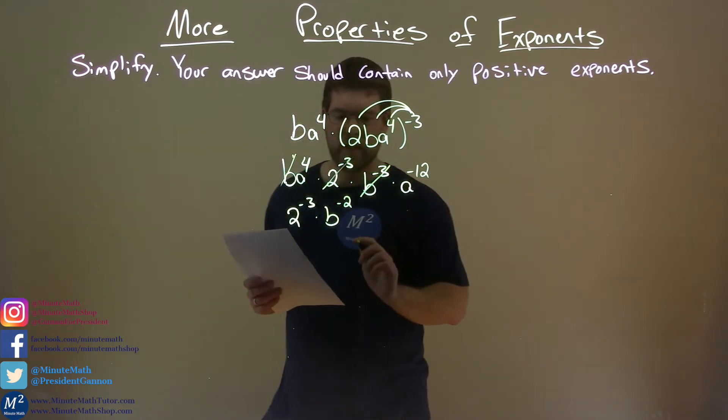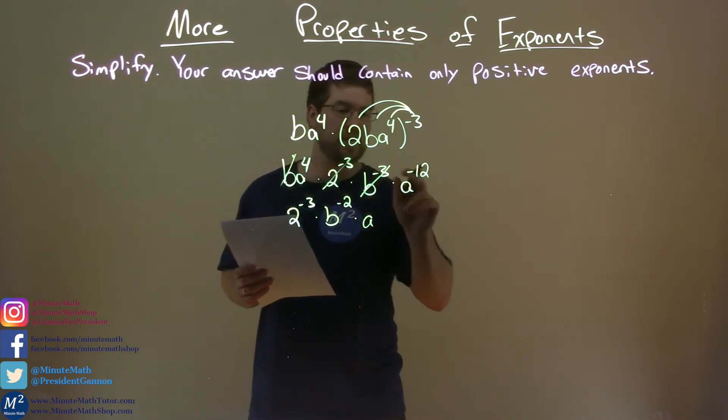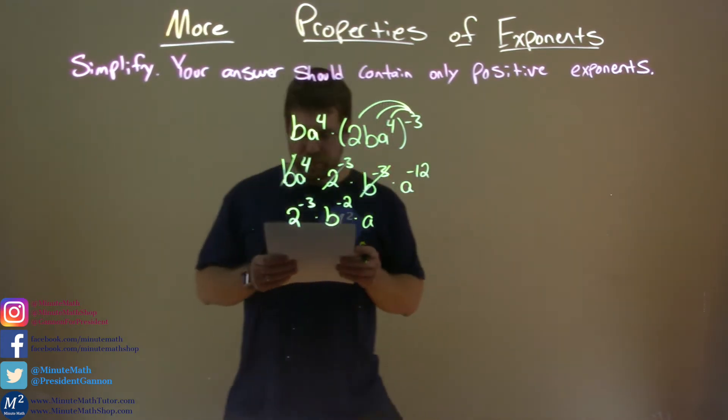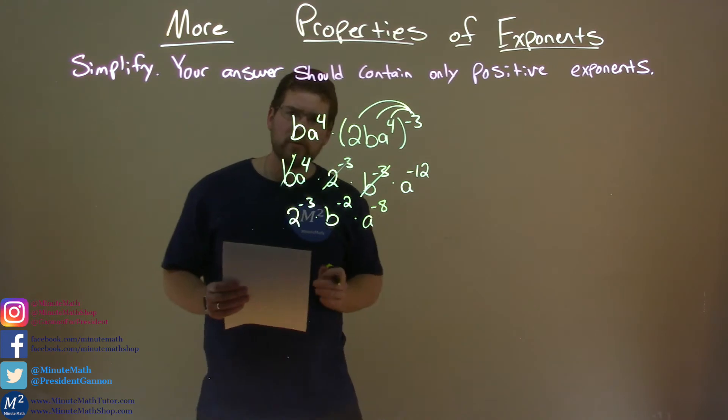Now we just have the two As. We have A to the fourth power times A to the negative 12. Again, we add the exponents. So 4 plus a negative 12 is a negative 8, and we're almost done.